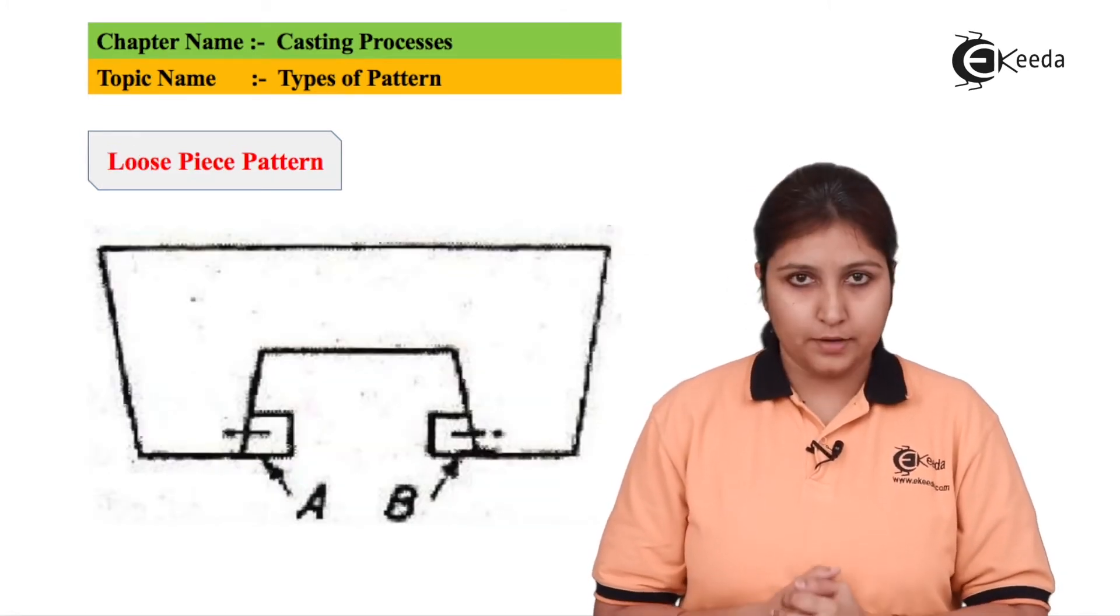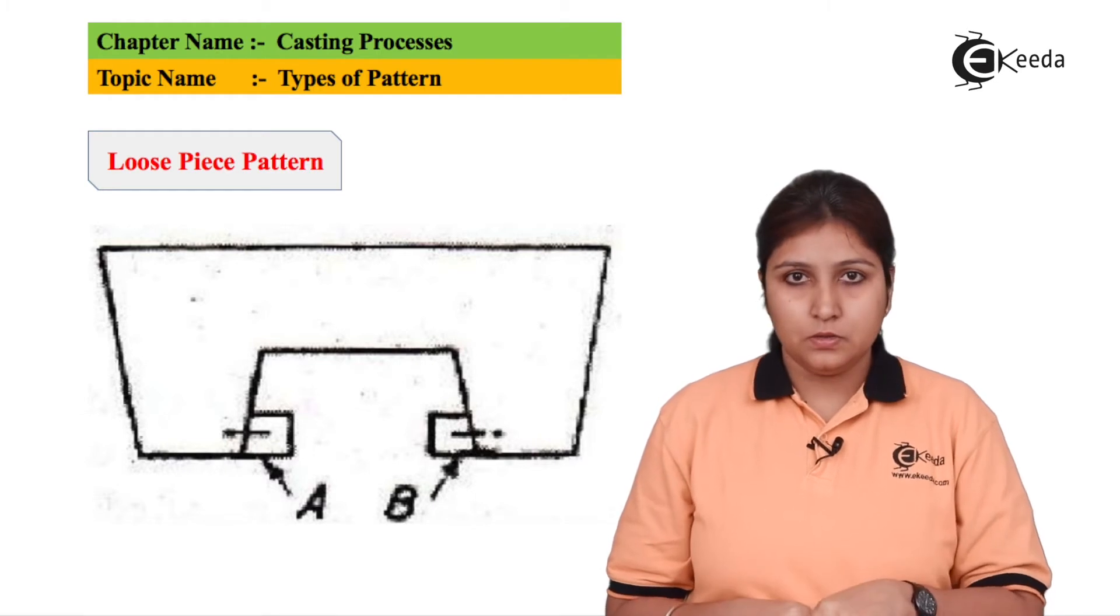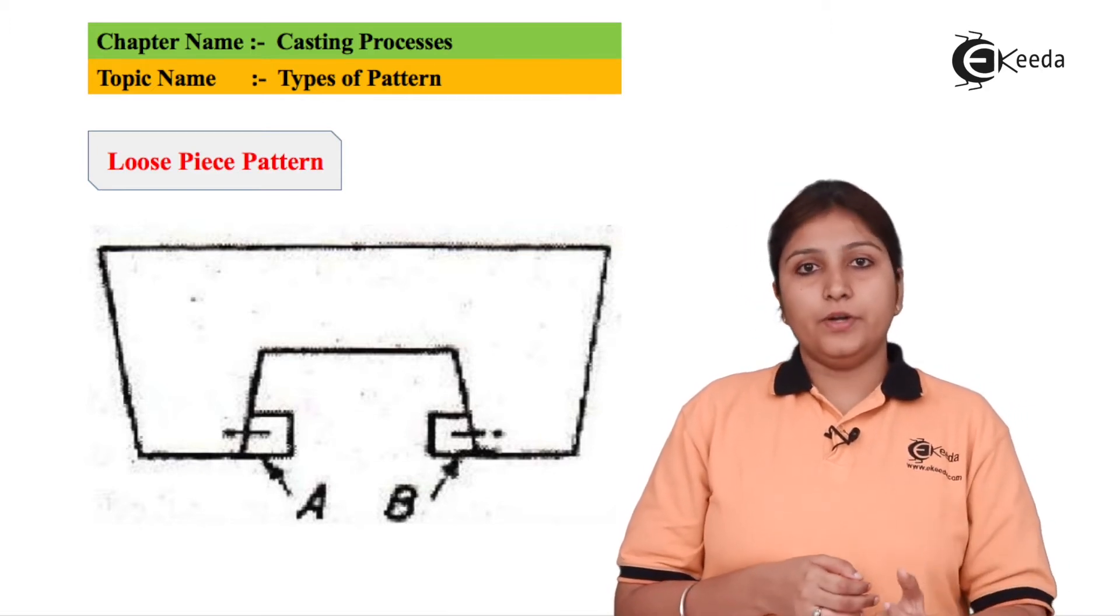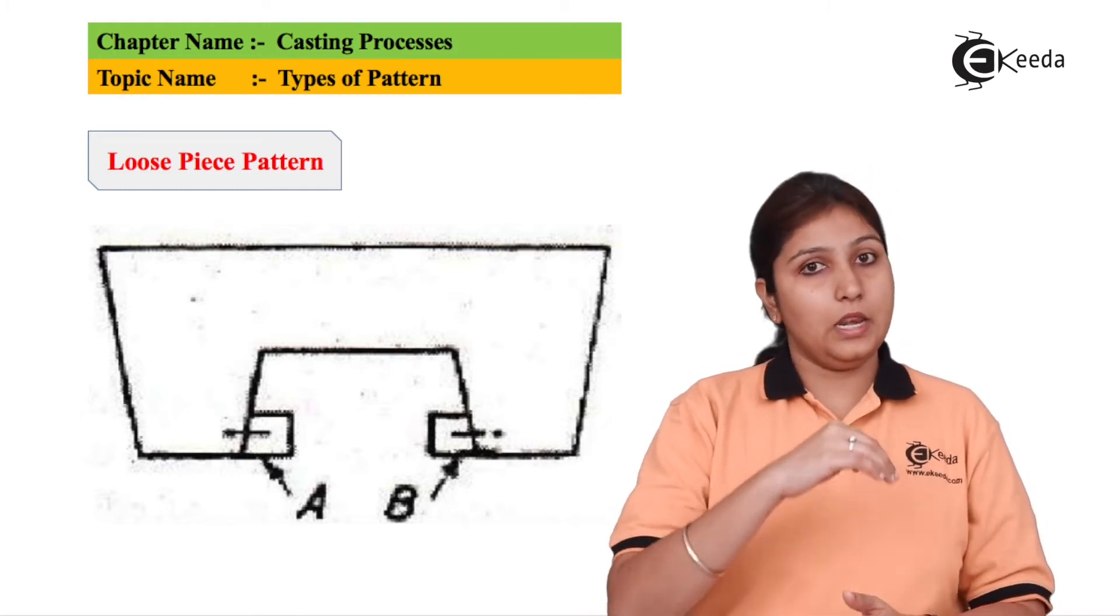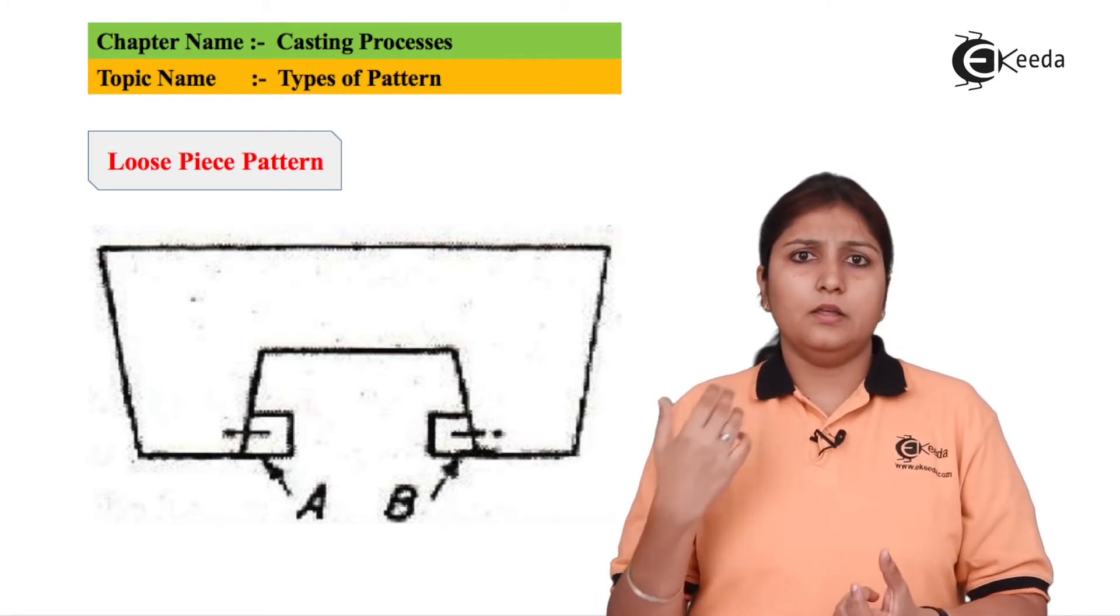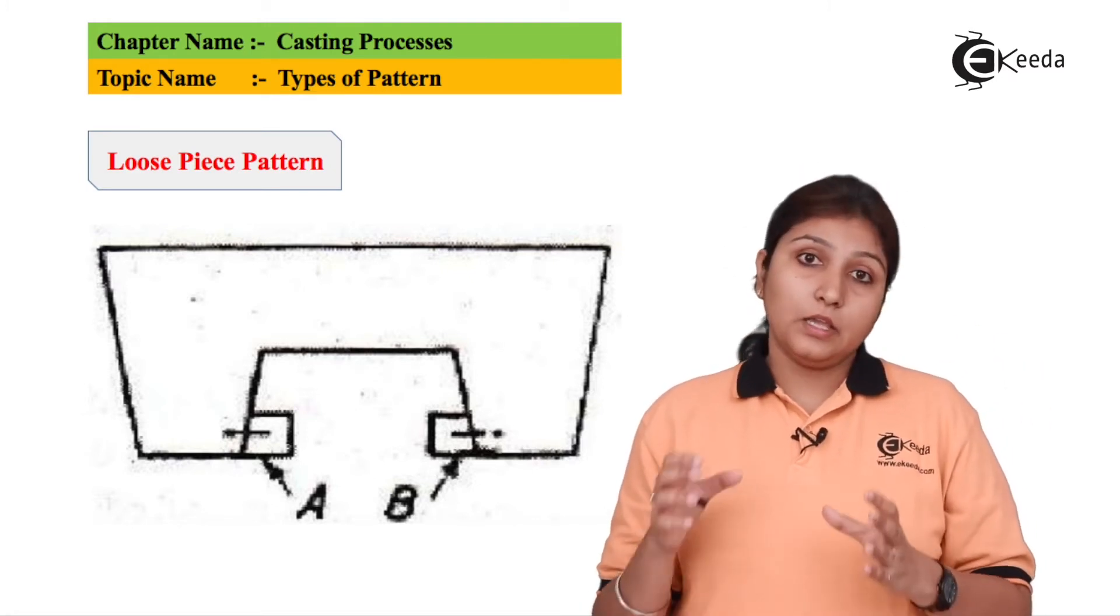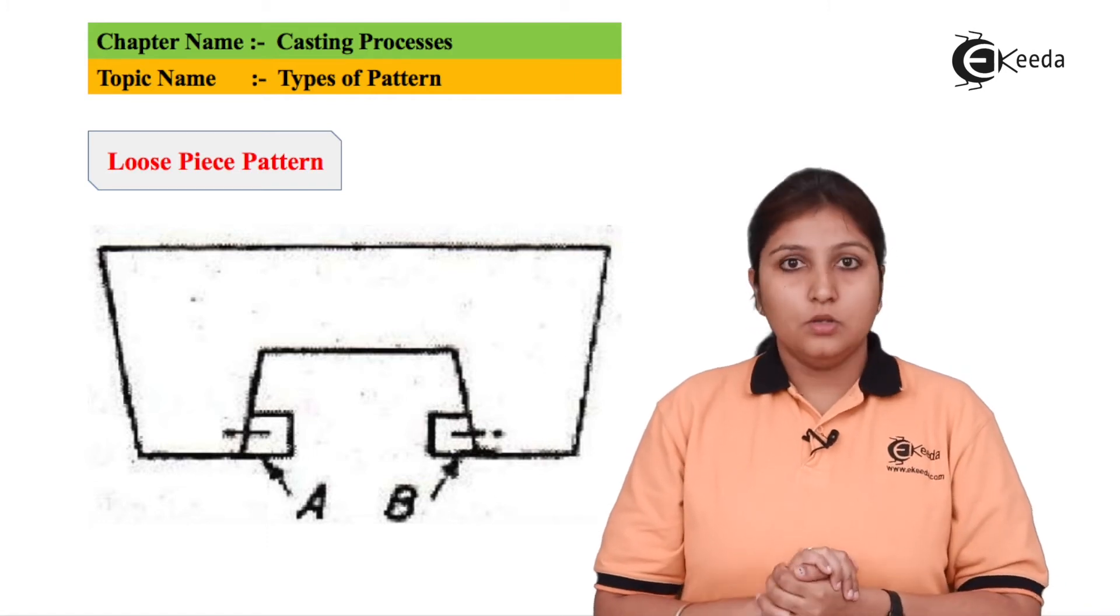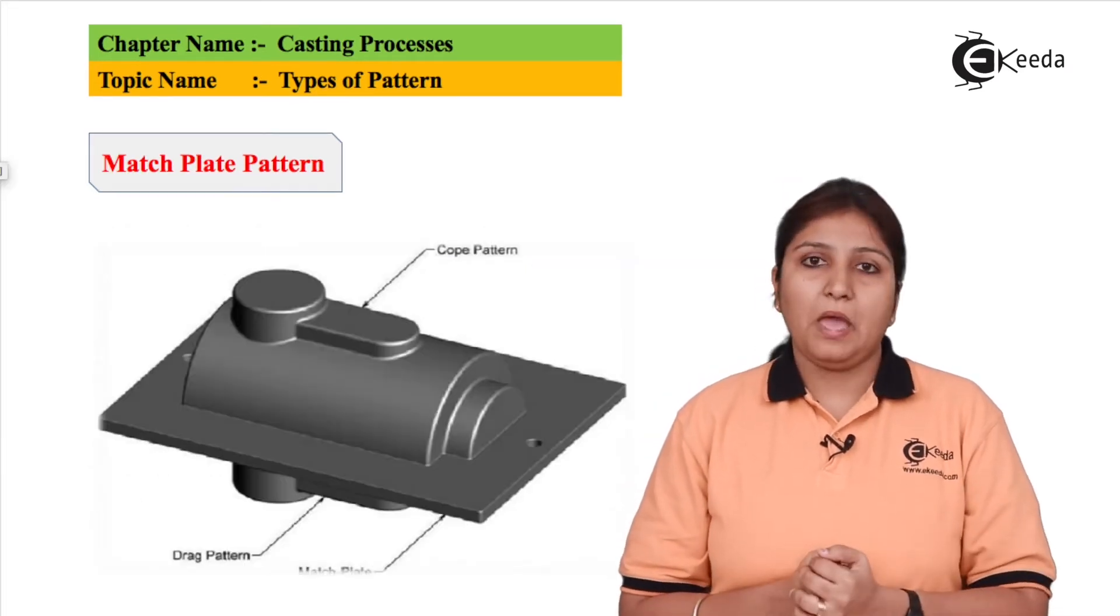The next pattern is loose piece pattern. So in loose piece pattern what the diagram actually says there are two loose pieces at the base. So what happens is if something is there to fit, if a small object is to be fitted in a parent object or a bigger object and there are n number of small objects and n number of parent objects. So in that case a loose piece pattern which is the daughter or the son of the parent object can be used and it has to be fitted in that place. So n number of loose piece patterns can be made for n number of parent objects.